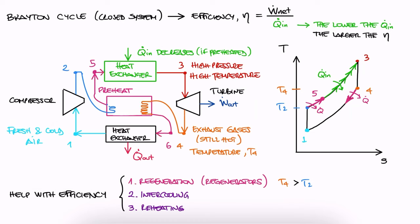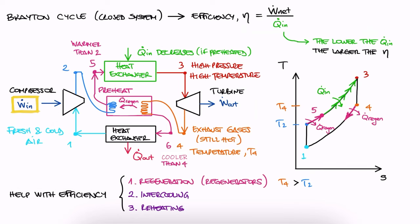This Q regen goes from 4 to 2. The now warmer gases are at state 5, and the cooler exhaust gases are at state 6. And again, since neither the work in or the work out changed, meaning that the net work out didn't change, but we did in fact reduce the necessary Q in, the efficiency effectively increases.